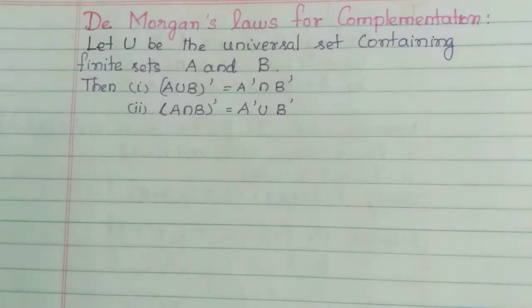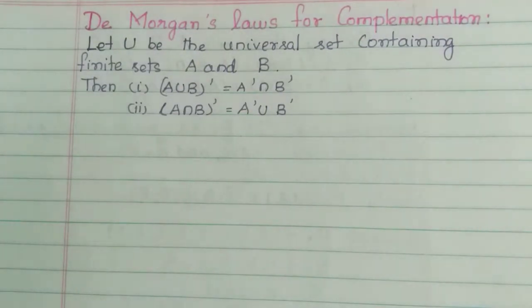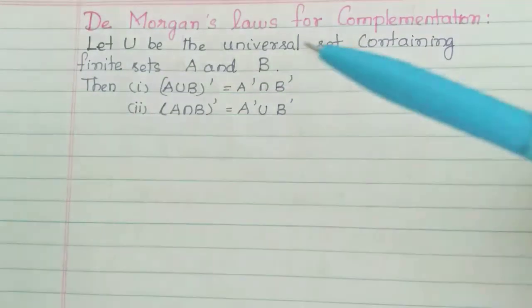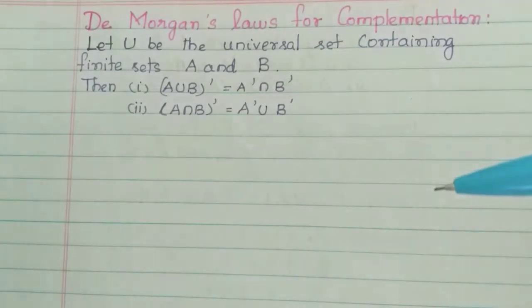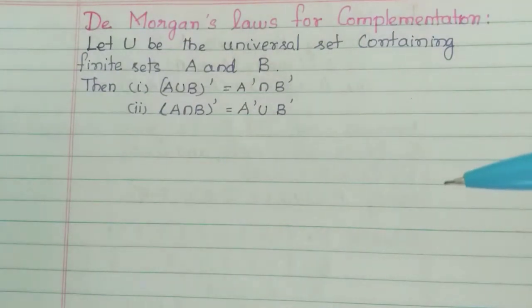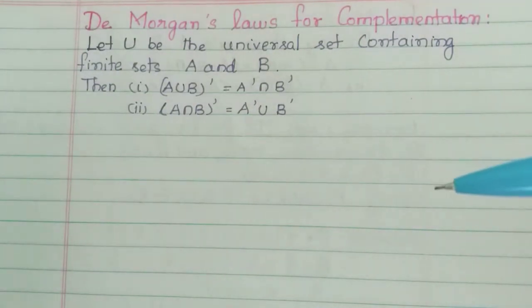We will see the Commutative Property, Associative Property, Distributive Property. If you look, you have a complement or difference. So if you have a complement or difference, you will automatically know what to do. This is De Morgan's Law.